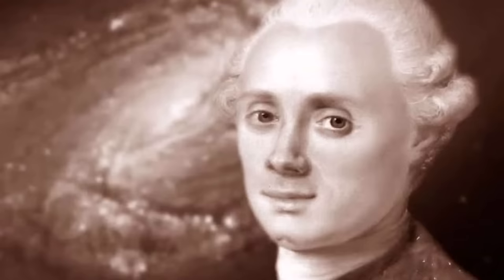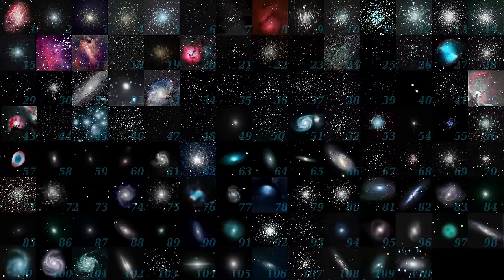In the late 18th century, another astronomer, Charles Messier, compiled a catalogue of celestial objects that could be mistaken for comets. The Messier catalogue, consisting of 110 objects, included galaxies, nebulae, and star clusters. This catalogue served as a valuable resource for astronomers seeking to distinguish between permanent and transient celestial phenomena.